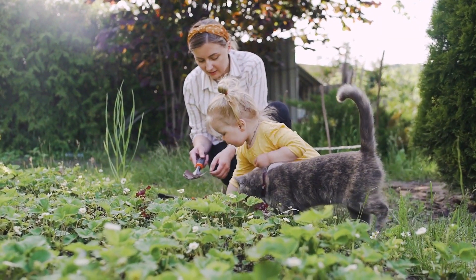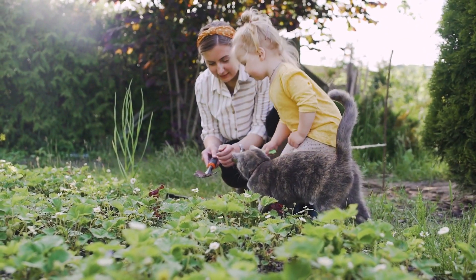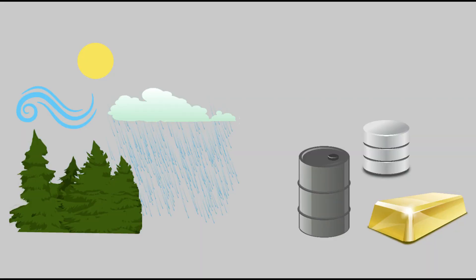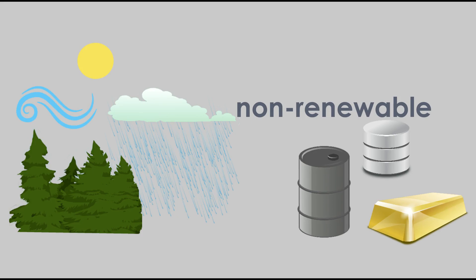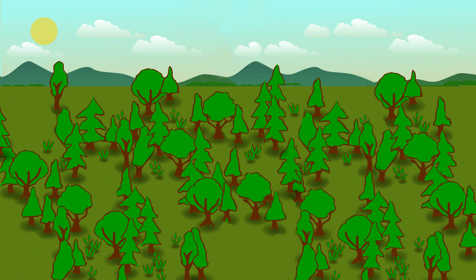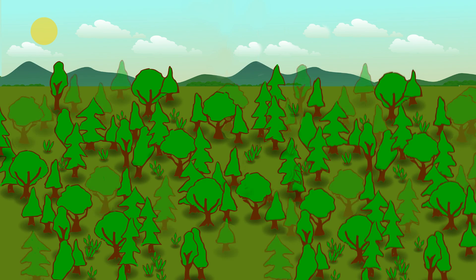Conservation is when people take care of the Earth's resources. Resources can be renewable or non-renewable. The forest is a renewable resource. People can use some of the trees without harming the forest. New trees will grow in their place if the forest is healthy.